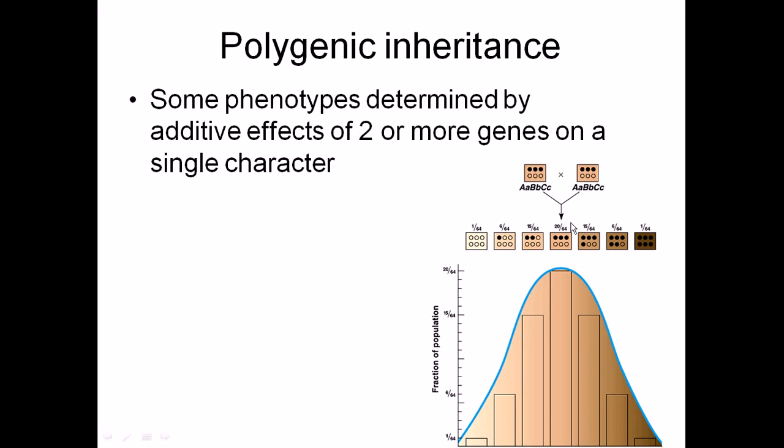If you place them in this graph where we have the fraction of population on the y-axis and different characteristics on the x-axis, we'll find a bell-shaped curve. This bell-shaped curve tells us the important scenario of polygenic inheritance.